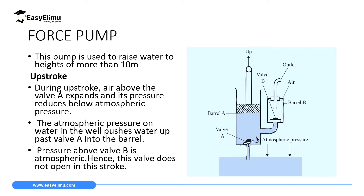The second pump we are going to look at is a force pump. A force pump can raise liquids to a height of more than 10 meters. It achieves this because it has two tanks: barrel A and barrel B. A student should note the parts: there is an outlet in the second tank, air inside barrel B whose function is to close valve B, barrel A, valve A, a space between the piston and valve A, and atmospheric pressure acting from outside.